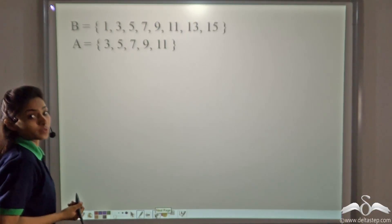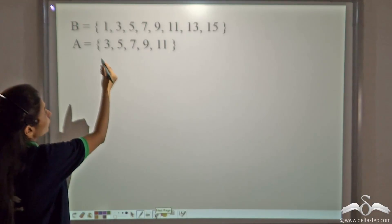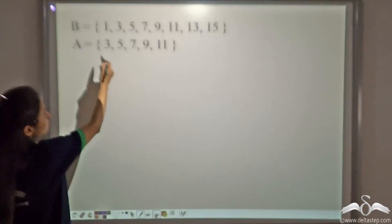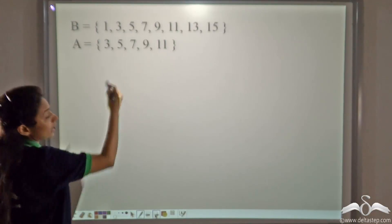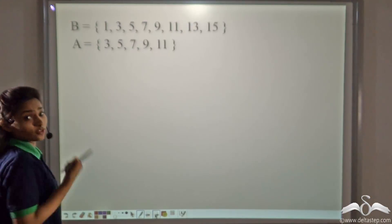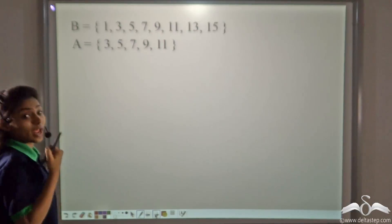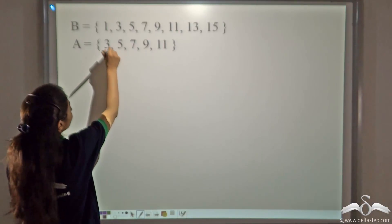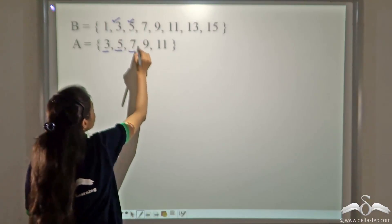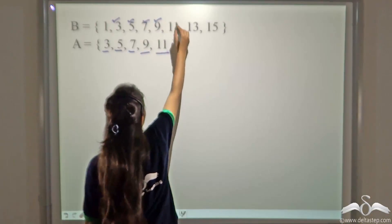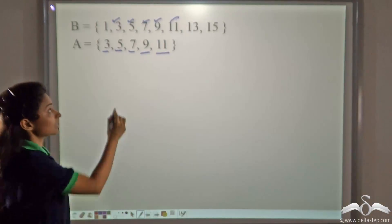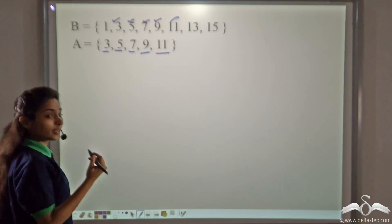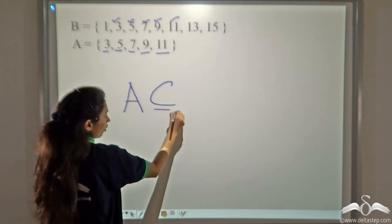Now let's work with numbers. B is the set with numbers 1, 3, 5, 7, 9, 11, 13, 15, and A is the set with numbers 3, 5, 7, 9 and 11. Is A a subset of B? Check: 3 is present, 5 is present, 7 is present, 9 is present, 11 is also present. Every element of A is present in B, so A is the subset of B. We write: A is the subset of B.